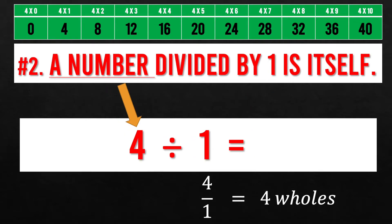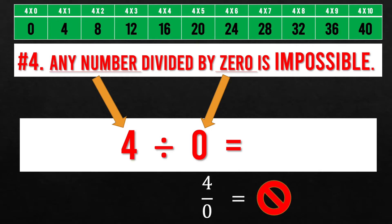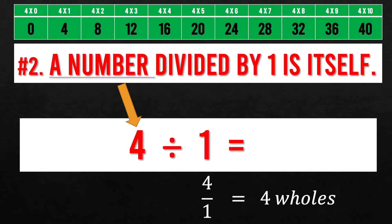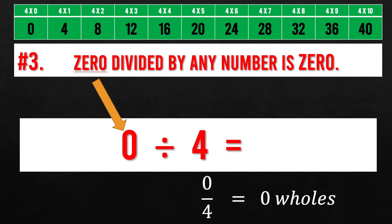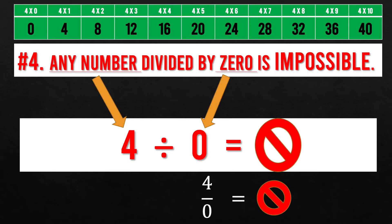Division properties: a number divided by itself is 1. A number divided by 1 is itself. Zero divided by any number is 0. Any number divided by 0 is impossible.